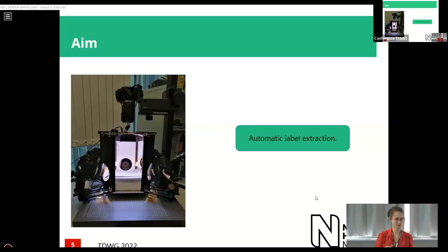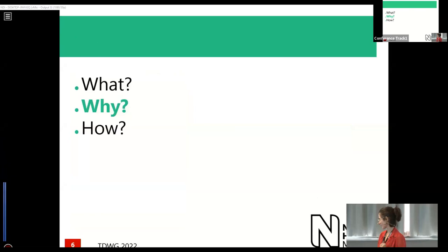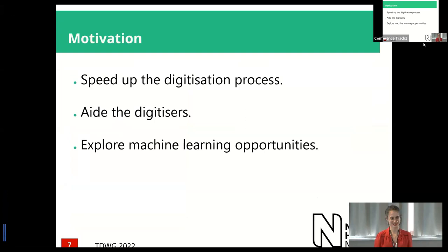Why are we doing this? We want to speed up the digitization process, otherwise it will take forever. We also want to help the digitizers, because right now they have to go through four different images of the labels and try to put them together. Can we find a way of merging the labels so they don't have to do this? And we want to learn about cool machine learning — where else can we apply ML and maths?